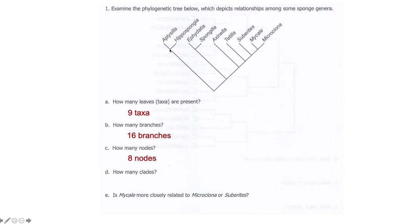Eight nodes in total. Those are all of the connection points, the vertices. Same thing. That's the same amount of clades. There are also eight clades. For this one, it was microcyona was the answer. It's more closely related to mycal than the subterite says.